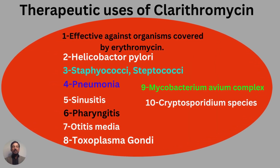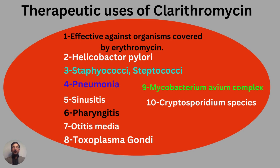Clarithromycin is effective against organisms covered by erythromycin, and is also very effective against Helicobacter pylori, staphylococci, and streptococci. It is also effective in pneumonia, sinusitis, pharyngitis, otitis media, Toxoplasma gondii, Mycobacterium avium complex, and Cryptosporidium species.